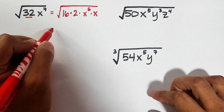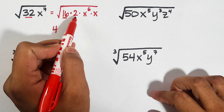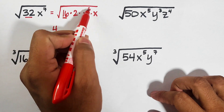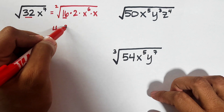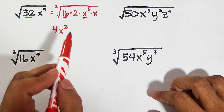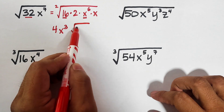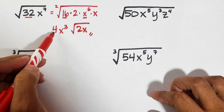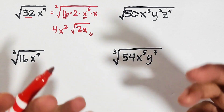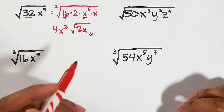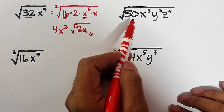Let's extract the square roots. The square root of 16 is 4. The 2 remains inside because it is not a perfect square. For x to the sixth, 6 divided by 2 is 3, therefore this is x cubed. What remains inside the radical sign are 2 and x. So our answer is 4x cubed times the square root of 2x.